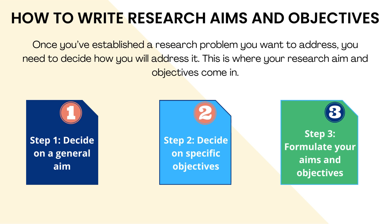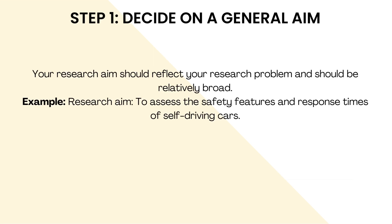How to write research aims and objectives: once you've established a research problem you want to address, you need to decide how you will address it. This is where your research aim and objectives come in. Step one: decide on a general aim. Your research aim should reflect your research problem and should be relatively broad. Example research aim: to assess the safety features and response times of self-driving cars.